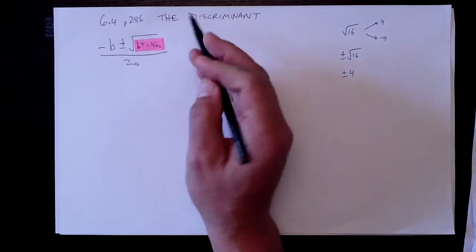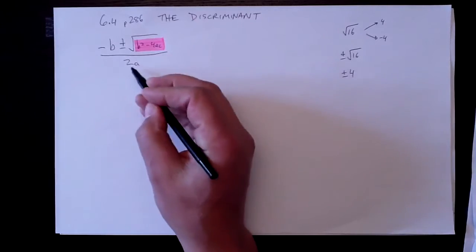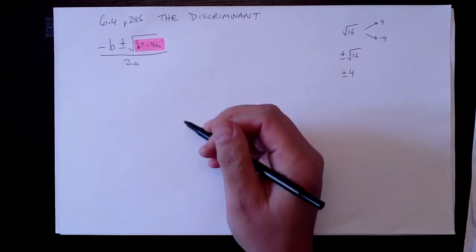And if it's zero, well, we just forget about it because there would just be minus b over 2a left over because that would be zero and we wouldn't care.